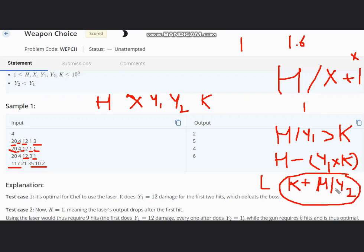And again we will check if H is not completely divisible by Y2, we will do plus 1. If this condition is not true, which means H by Y1 is only enough, so we will return H by Y1 as the laser. And here also check and do plus 1 if it's not completely divisible.